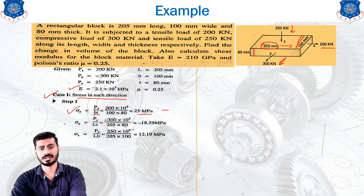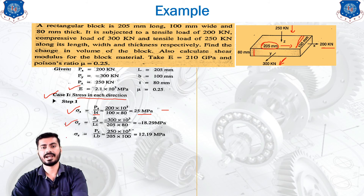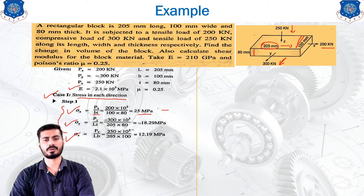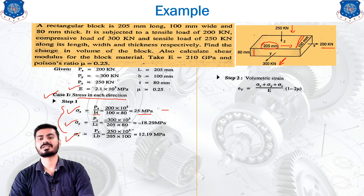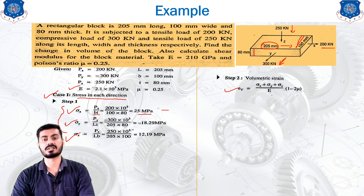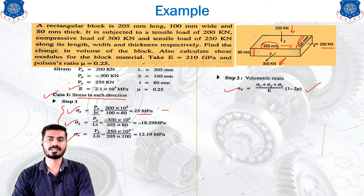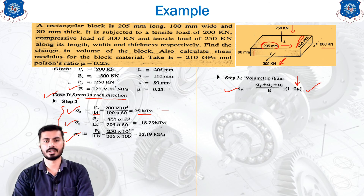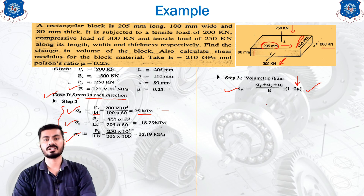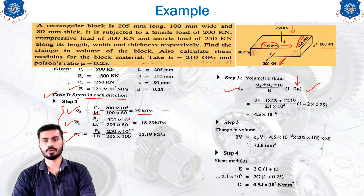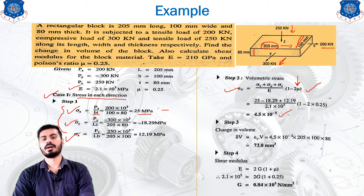Similarly, sigma_y and sigma_z are calculated from their respective forces and cross-sectional areas. With all three stresses known, the volumetric strain is found using epsilon_V = (1/E)(sigma_x + sigma_y + sigma_z)(1 − 2mu), since the block is subjected to three mutually perpendicular stresses and Poisson's ratio mu is provided in the given data. The volumetric strain works out to 4.5 × 10⁻⁵, which is dimensionless.